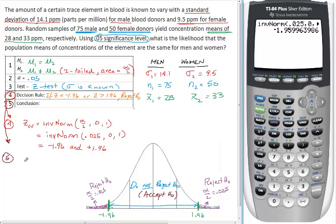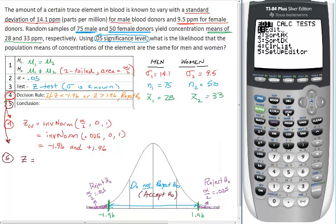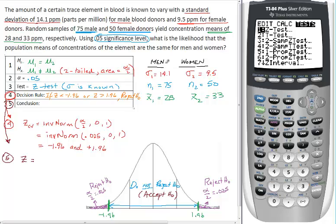Before we run our conclusion, we have work to do in step 5. In step 5, we actually have to run the test value - find that calculator value of Z. We used the formula in a previous video, but it's much easier to use the calculator. Go to STAT - all our tests are found under STAT. Go across to tests. This is a two-sample z-test, so go down to 2-sample Z test.